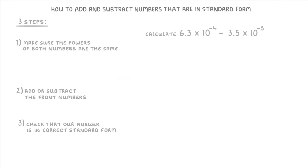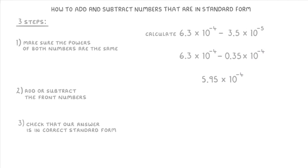For one last example, let's do 6.3 times 10 to the power of negative 4, minus 3.5 times 10 to the power of negative 5. Because the powers are both negative, minus 4 is actually the bigger power. This means 6.3 times 10 to the power of negative 4 stays the same, but 3.5 times 10 to the minus 5 becomes 0.35 times 10 to the minus 4. Subtracting the front numbers: 6.3 minus 0.35 gives 5.95, and we tag on the times 10 to the minus 4. Checking that 5.95 times 10 to the minus 4 is in standard form — it is — so that's the final answer.